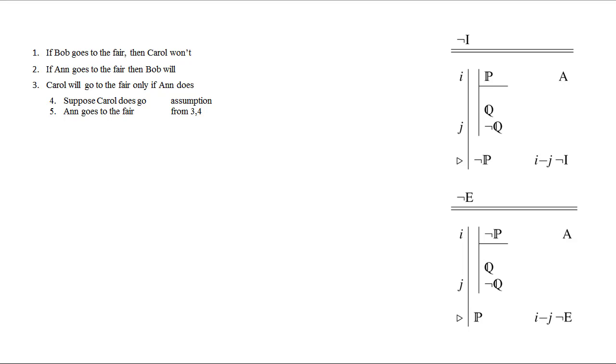So we suppose Carol does go to the fair. Now if Carol does go to the fair, it turns out based on 3 and our new assumption in 4 that Ann goes to the fair. But that means, together with 2, that Bob goes to the fair. But 1 told us that if Bob goes to the fair, then Carol won't. And since 6 says that Bob goes to the fair, that tells us that Carol won't go to the fair. But that contradicts our assumption in line 4.